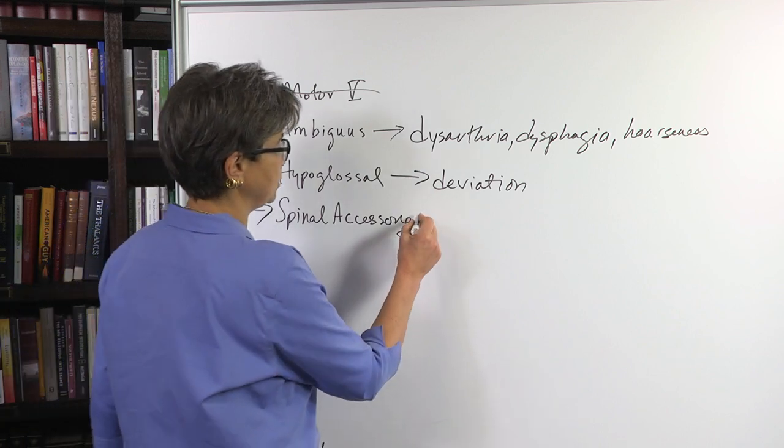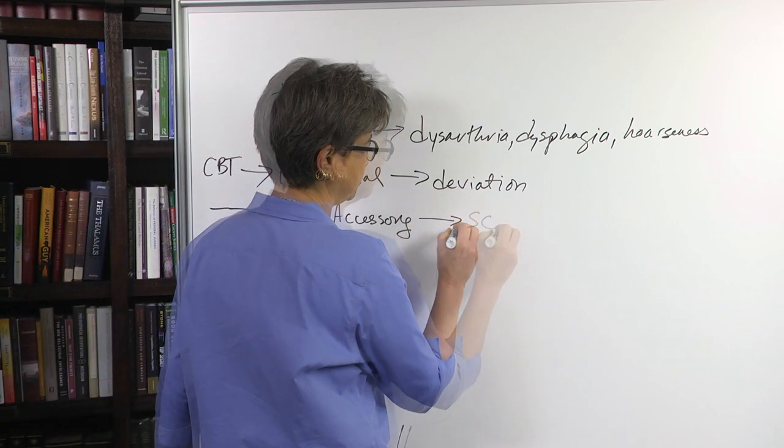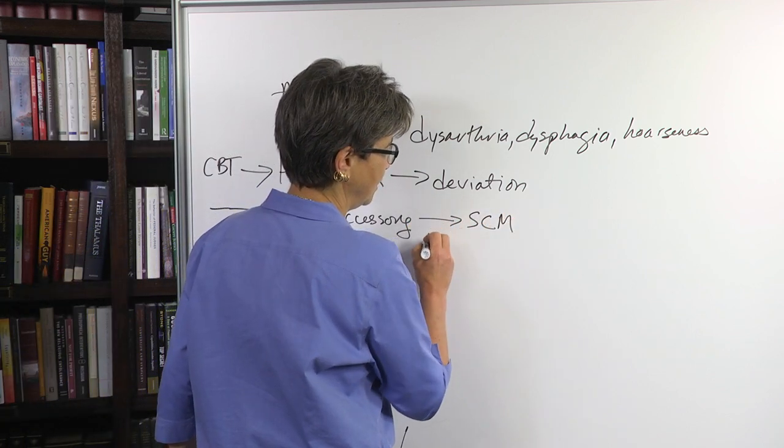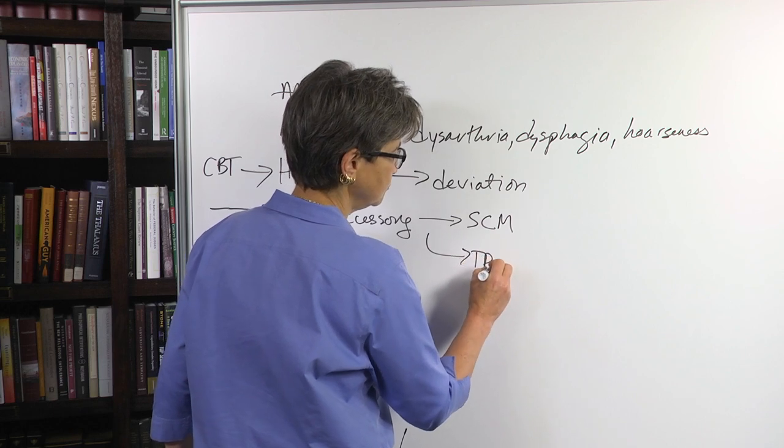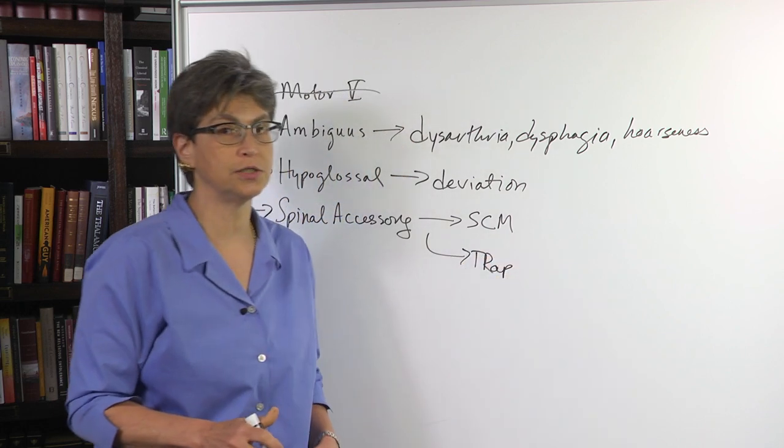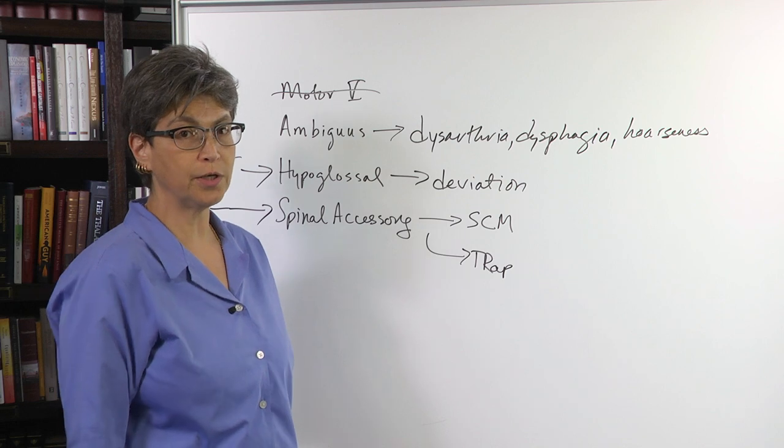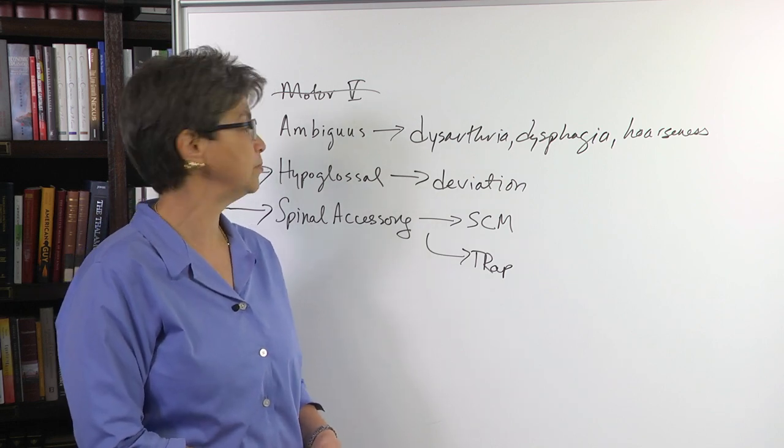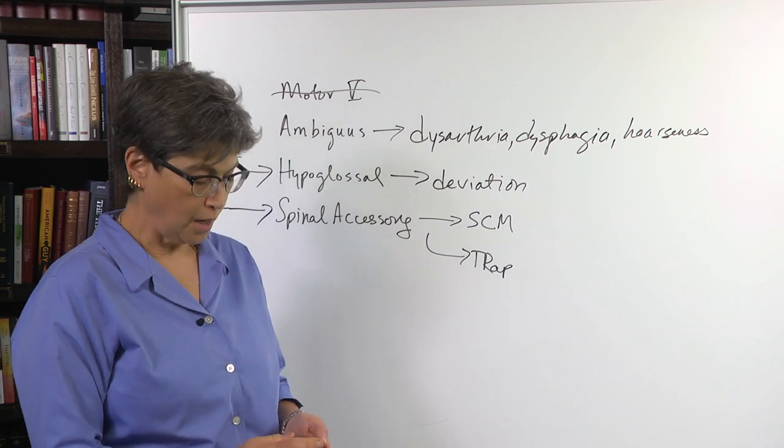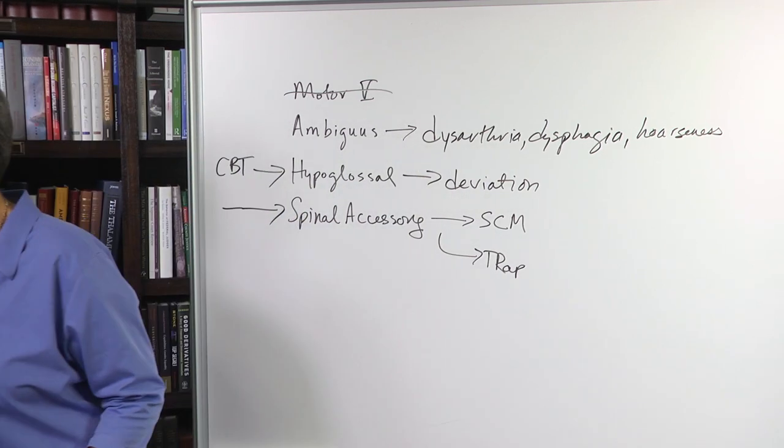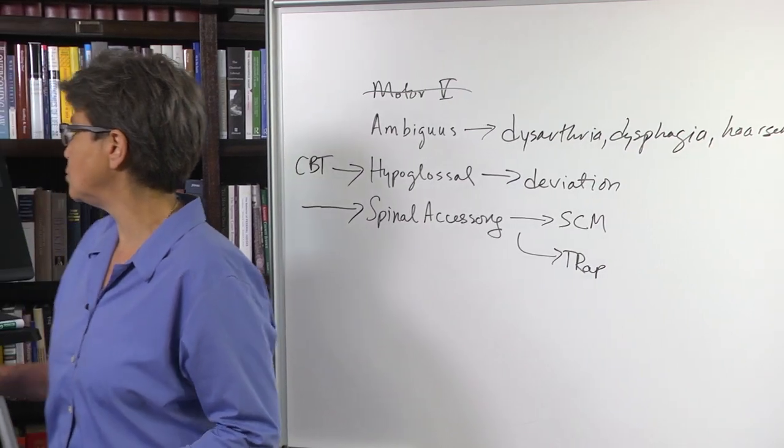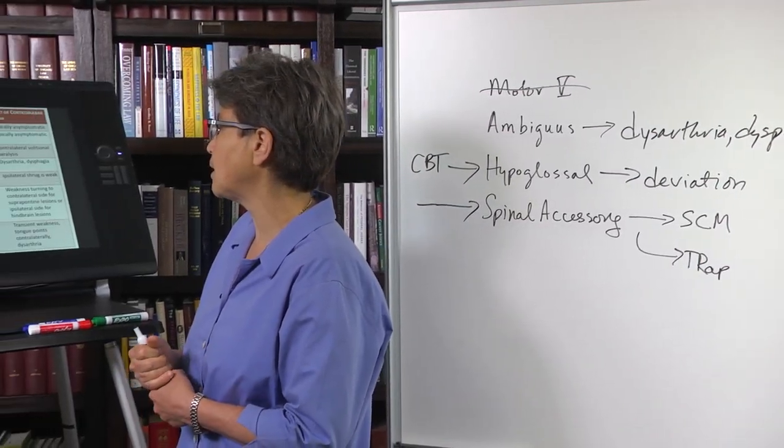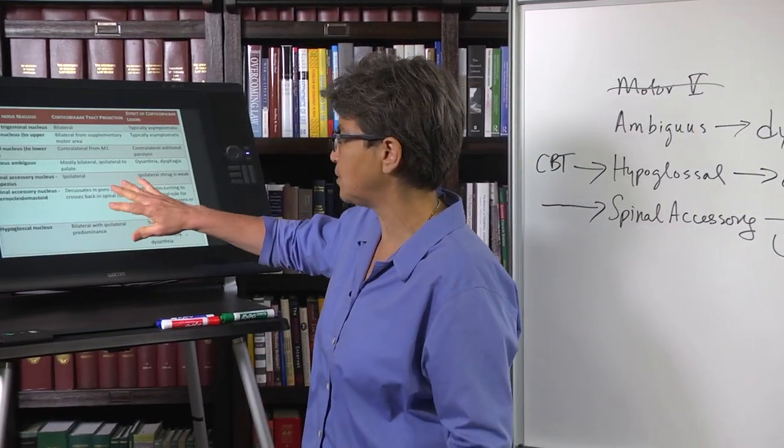Finally, there is the innervation of the spinal accessory, which innervates two different muscles: sternocleidomastoid and the trapezius. The trapezius is going to cause a problem with shrugging, and the sternocleidomastoid is going to cause a problem in turning, and both of those are very likely to be symptomatic.